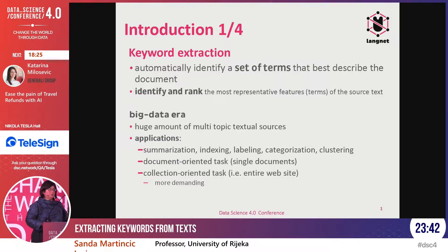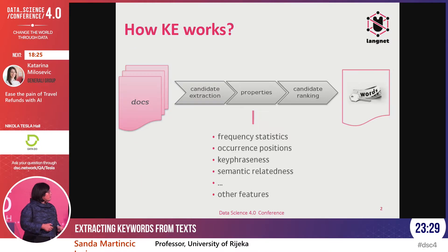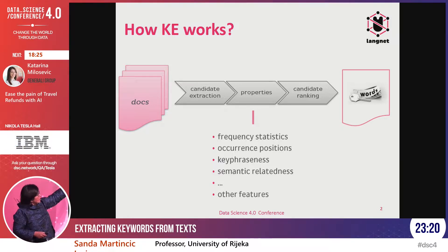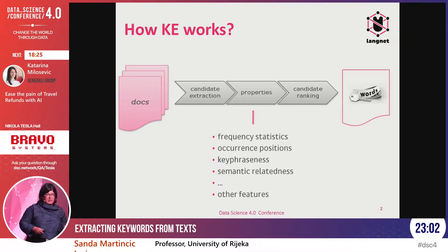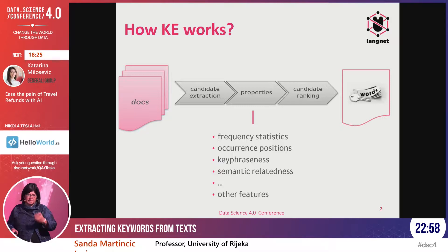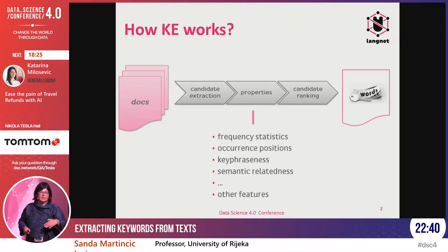Keyword extraction itself can be done on the level of each document or on the level of the whole collection. I'm going to show you results for both. This is the big picture of keyword extraction: at the input we have a set of documents. From different methods we extract candidates — words which are potentially keywords. Then we calculate properties of these words: statistical properties, occurrence position, or more advanced properties like semantic relatedness. According to these properties, we rank the keywords and cut the ranked list at top five or top ten, depending on how many keywords we want.